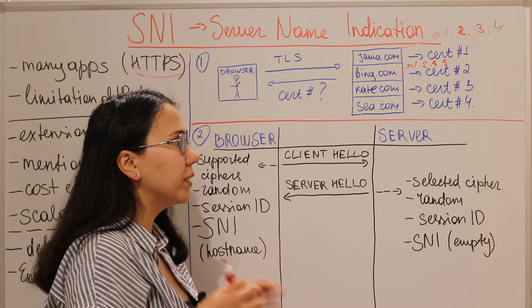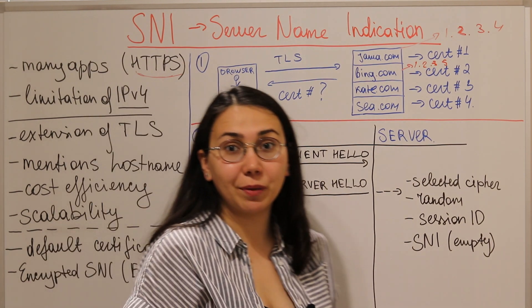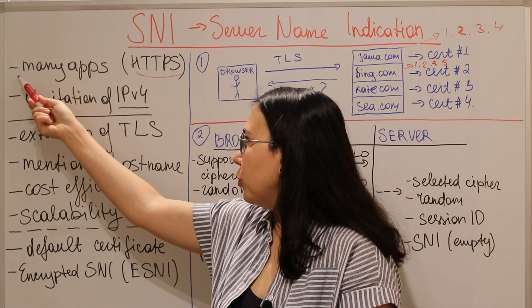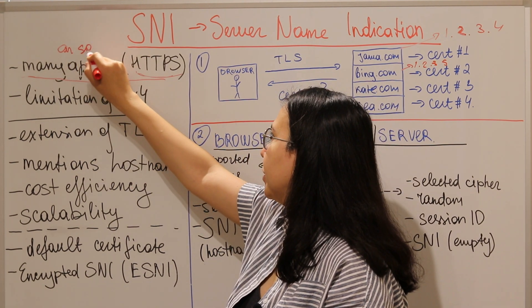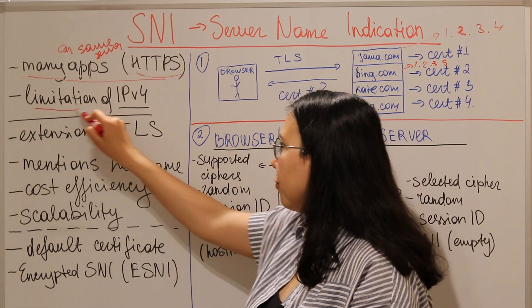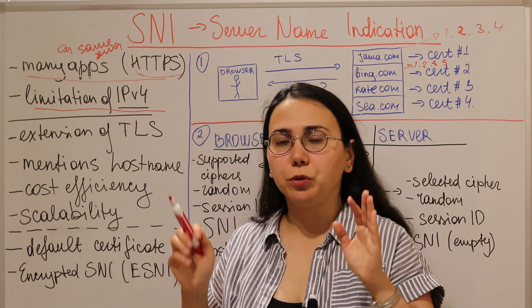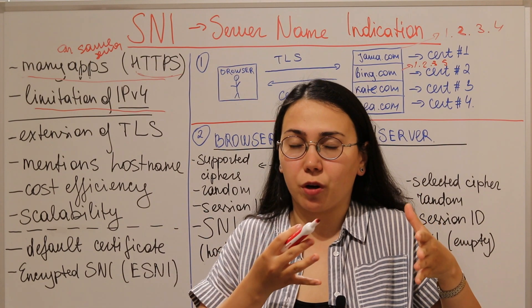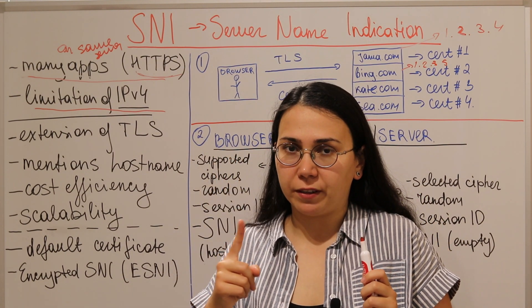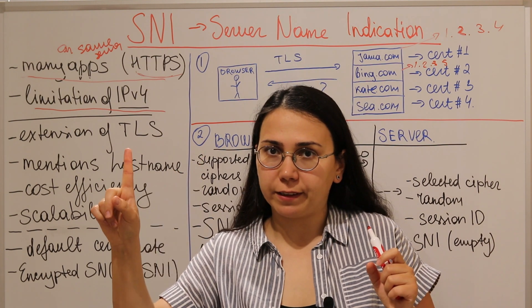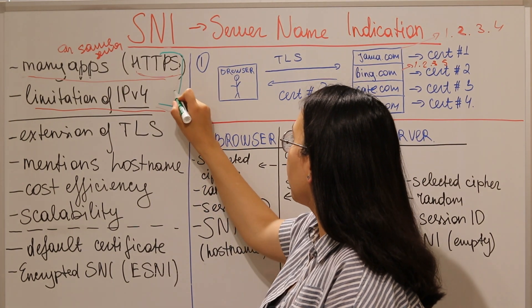IPv4 has a limited number of numerical combinations, which is why IPv6 was introduced with its longer address strings. We simply cannot assign a unique public IPv4 address to every application on a shared server. So we have two problems: many applications on one server, and a shortage of IPv4 addresses. We can't give a public IP address to each application, since one physical server has one IPv4 address.